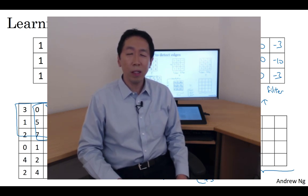The idea that you can treat these nine numbers as parameters to be learned has been one of the most powerful ideas in computer vision. Later in this course, later this week, we'll actually talk about the details of how you actually go about using backpropagation to learn these nine numbers.